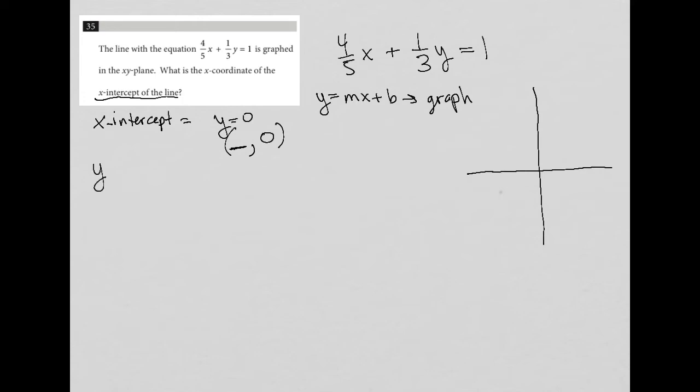So I can just say, what happens when y equals 0 into this equation? Let's rewrite it with y equals 0. So 4/5x plus 1/3 times 0, because that just goes away, equals 1. So really what I have here is 4/5x equals 1.